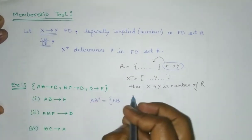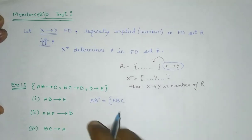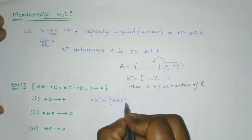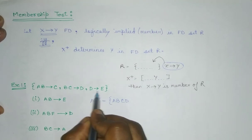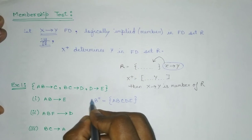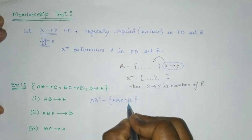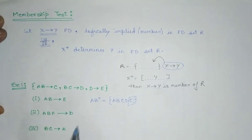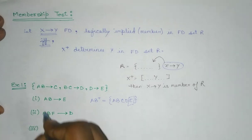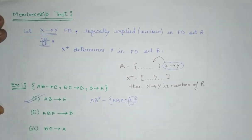So here C, using B and C, we can get D. So I am writing D. And using D, I can get E. So here you can see that the AB closure is giving us E. That means AB belongs to, is a member of this FD set. That means this one is a member of this FD set. Now similarly, I can find out the second one.